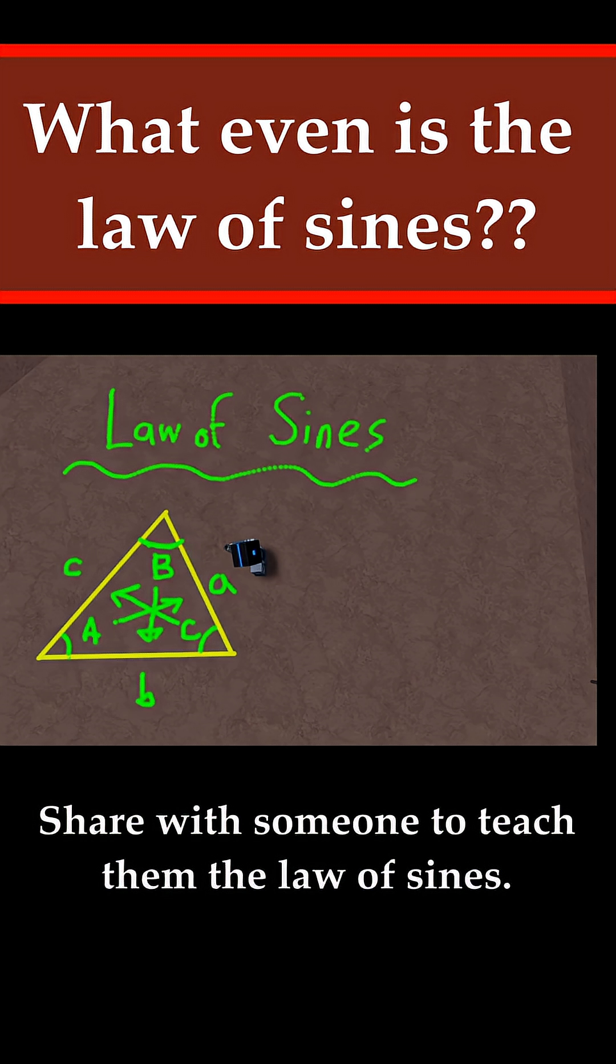So what's the law of sines say about all these sides and angles? Well, it's very simple. I'm going to write it down. So all it says is if you take the sine of A, angle A, and divide it by little a, which is just the side, that's equal to, if you take the sine of B, angle B, and divide it by side B, which is also equal to the sine of angle C divided by side C.